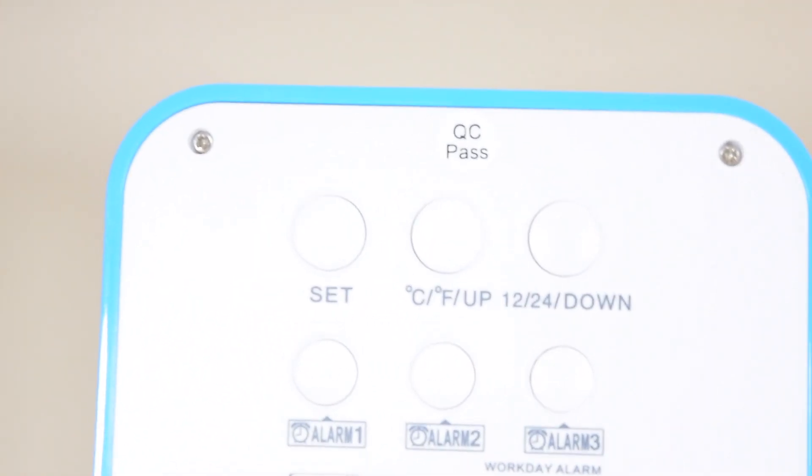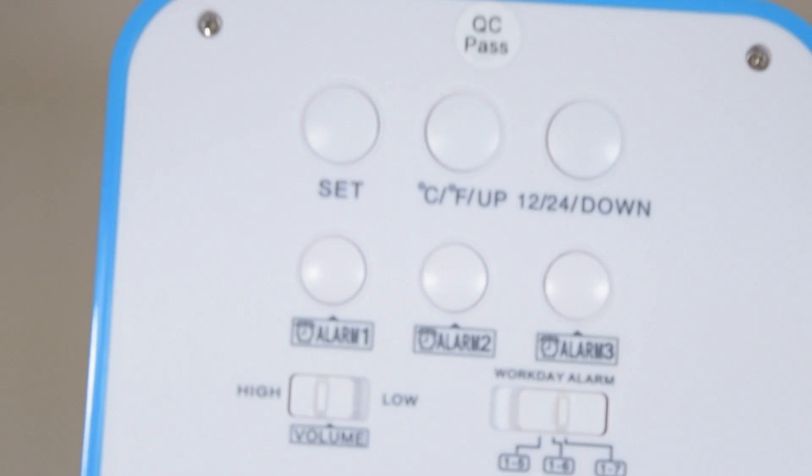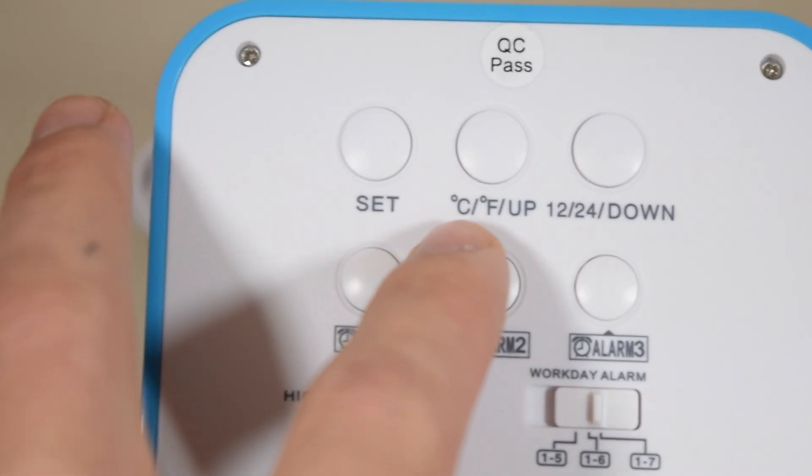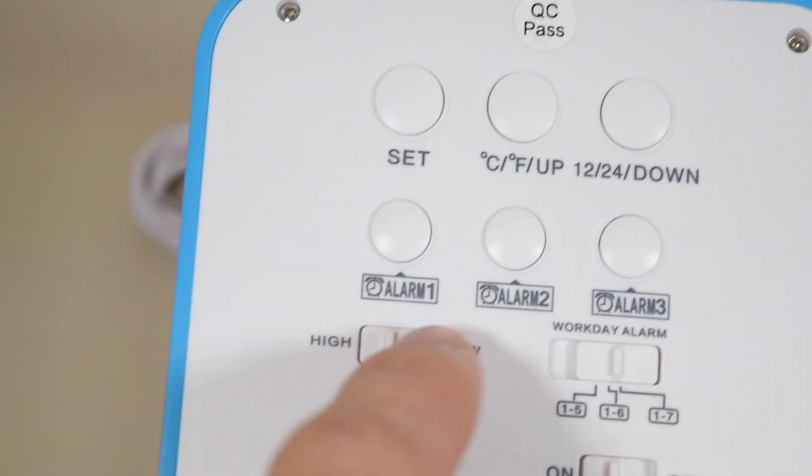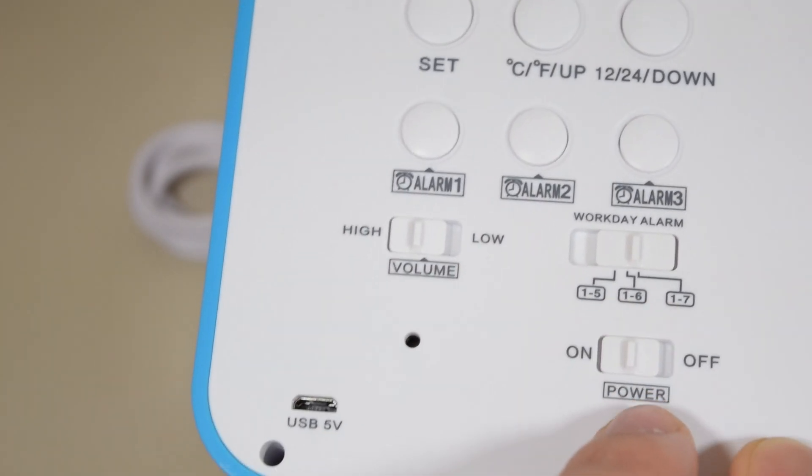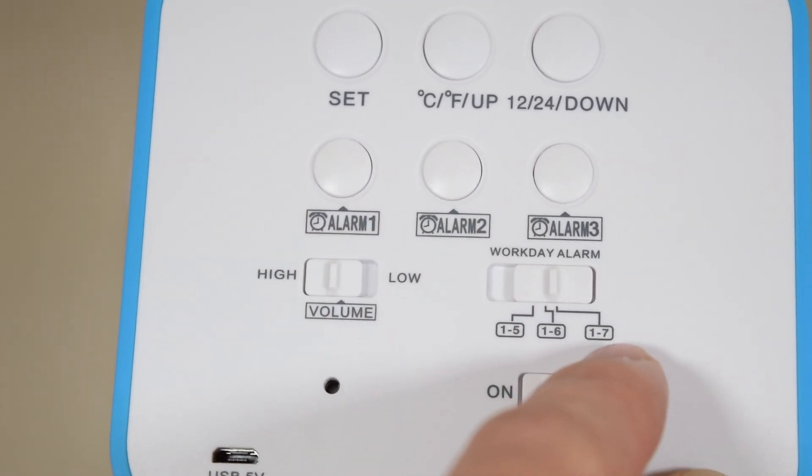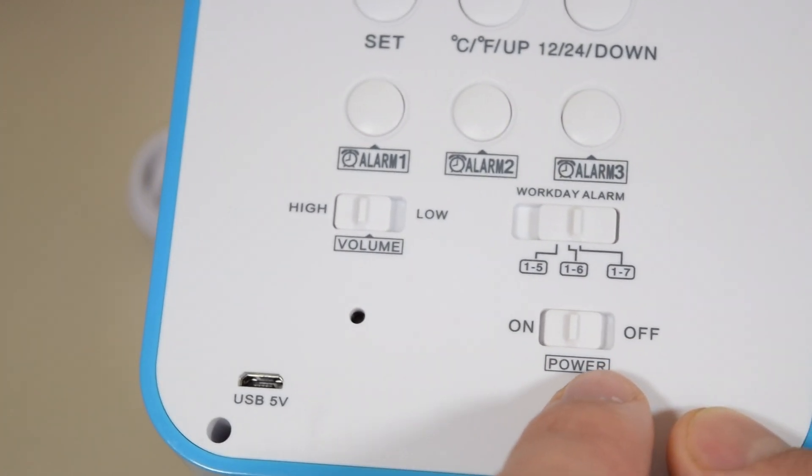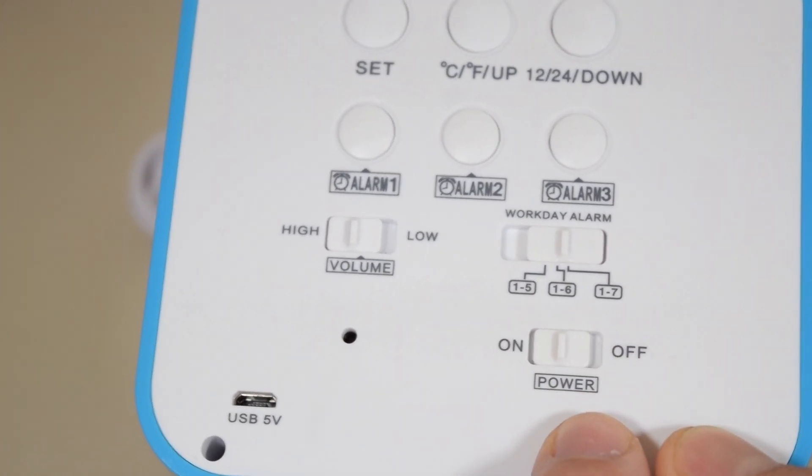Let's look at the back of the machine. You have settings for Celsius/Fahrenheit, 12/24 hour, alarm 2, 3, 4, volume high, workday alarms. You can choose which alarm you want - alarm 1, 2, or 3. You can have up to seven alarms: 1 through 5, 1 through 6, 1 through 7, on and off. So if you don't want it on, you can have it off or you can have it on and reset itself.